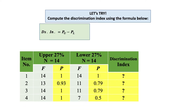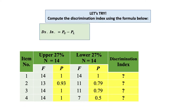To compute for the Discrimination Index, subtract the proportion of the lower group from the proportion of the upper group. For the first item, the difference of the proportions of the upper and lower group is 1 minus 1, which equals 0 — the Discrimination Index for that item.